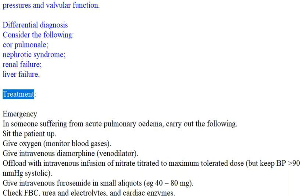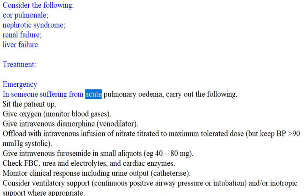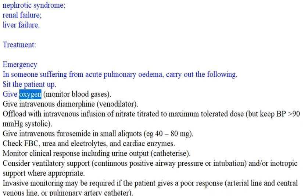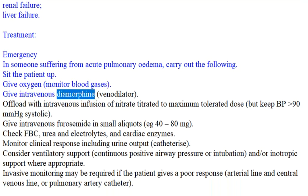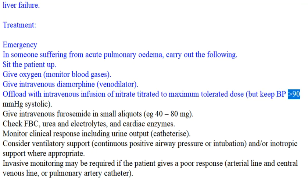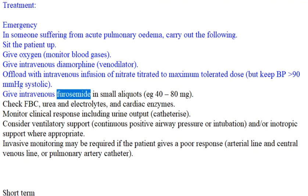Treatment — Emergency: in acute pulmonary edema, sit the patient up, give oxygen, and monitor blood gases. Give intravenous diamorphine as a venodilator. Offload with intravenous infusion of nitrate titrated to maximum tolerated dose, keeping BP greater than 90 mmHg systolic. Give intravenous furosemide in small aliquots, e.g., 40–80 mg.